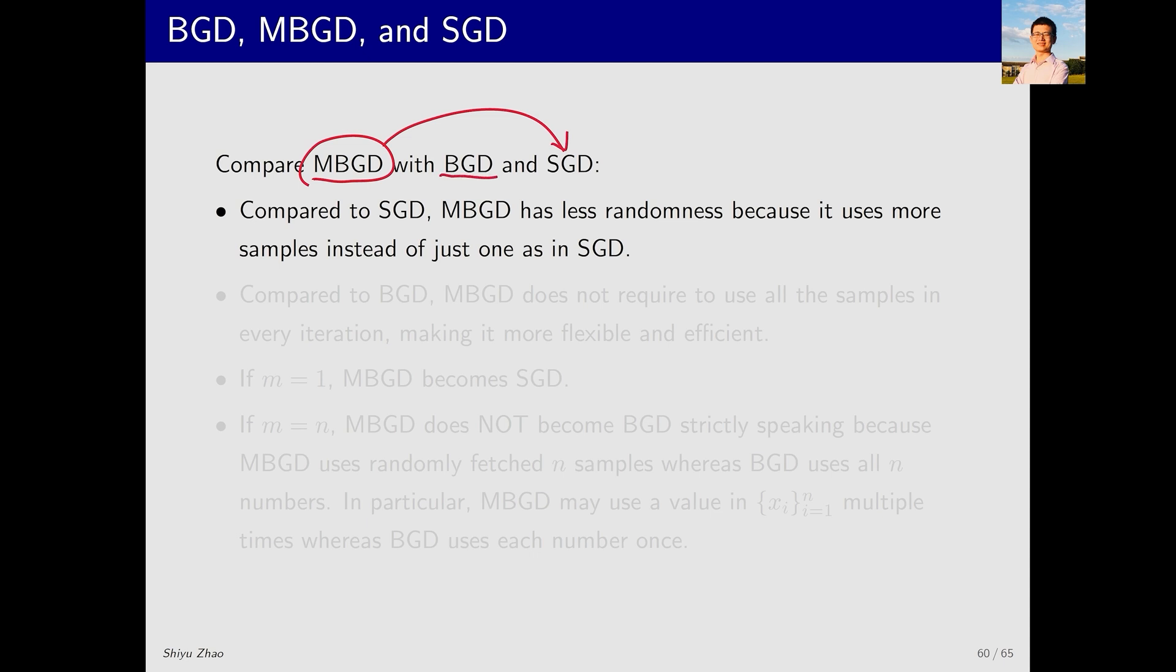Therefore, on the one hand, MBGD has less randomness than SGD because it uses more samples to calculate the average. On the other hand, MBGD uses relatively fewer samples than BGD, making it somewhat more random. However, since it does not require using all samples, it is more flexible and efficient.